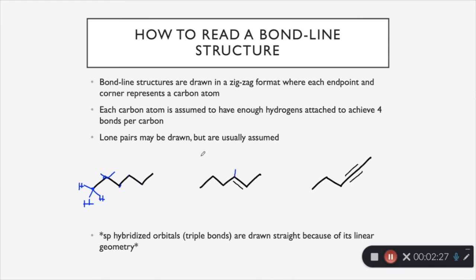The lone pairs may be drawn, but they're also usually assumed. And especially for carbon atoms, you usually don't need to draw in lone pairs, but sometimes it will be necessary. And then I made a note over here for SP hybridized orbitals, or simply triple bonds.